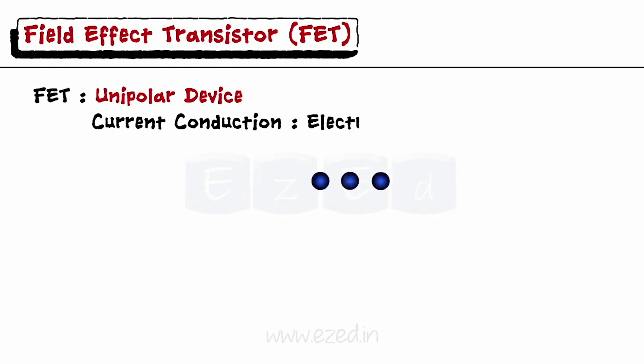Field Effect Transistor, abbreviated as FET, is a unipolar device meaning that current conduction takes place only due to one type of carrier.